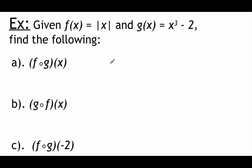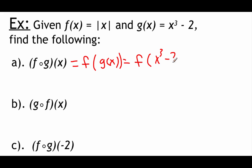Here are the two functions we'll work with: f(x) = |x| (absolute value of x) and g(x) = x³ − 2. For part A, f composed with g of x means we take f(x) and plug g(x) into it. We know g(x) is x³ − 2, so we can write this as f(x³ − 2). Wherever we see an x in function f, we replace it with x³ − 2. Since x is inside the absolute value brackets, we replace it to get |x³ − 2|.